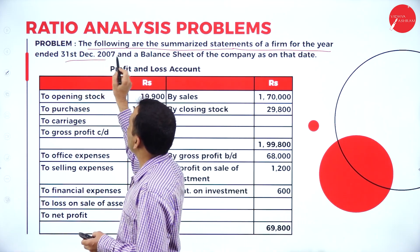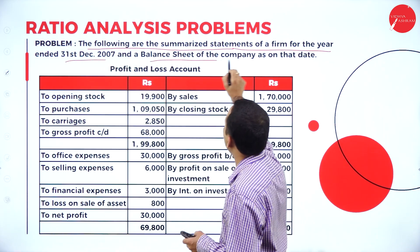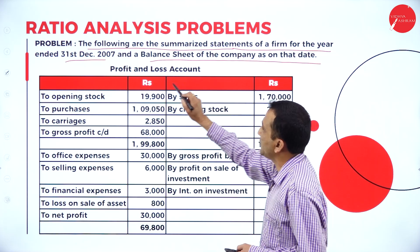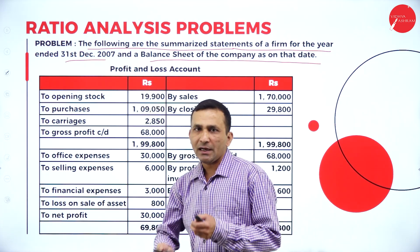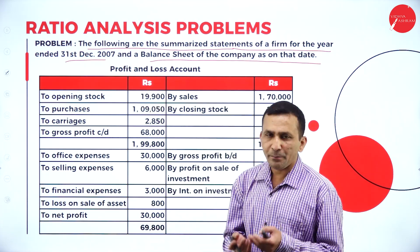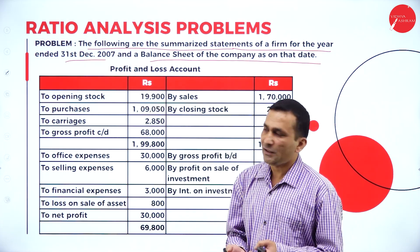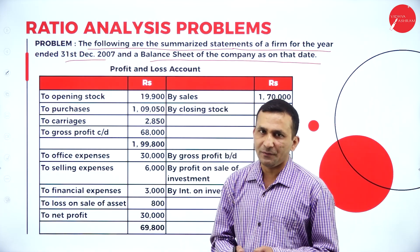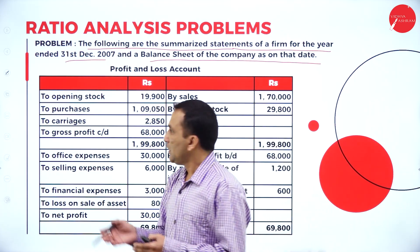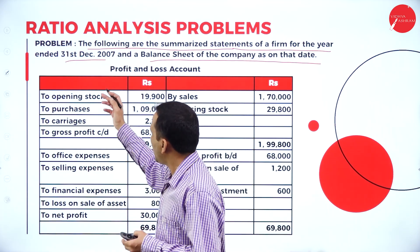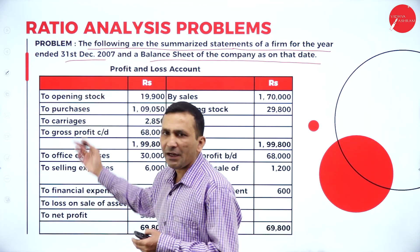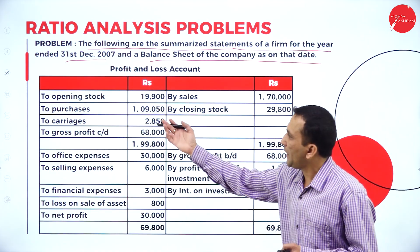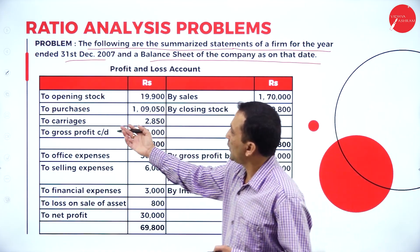The balance sheet of the company on that date, as well as the P&L account — the P&L account is the income position — is given to find out the income.